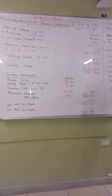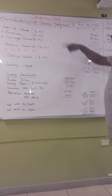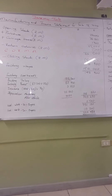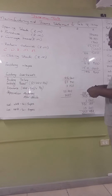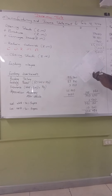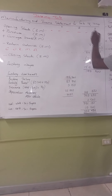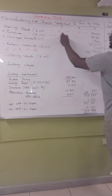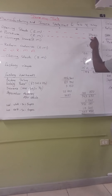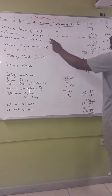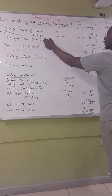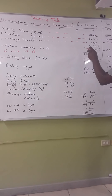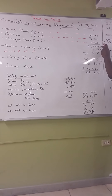We're starting with the opening stock of raw material. If you're looking at the question paper, you'll see the opening stock of raw material is 27,000. Add your purchases of raw material which is 36,300, plus carriage inwards on raw material. When you add all three together you get 65,000.